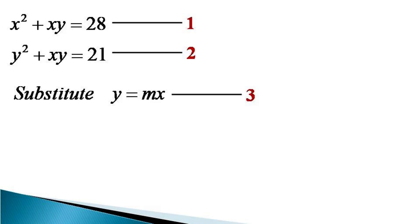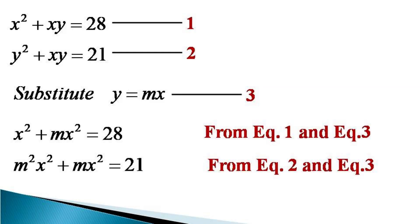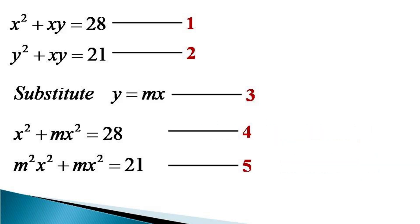Now we put this value of y from equation 3 into equations 1 and 2 to get modified equations: x² + mx² = 28 from equations 1 and 3, and m²x² + mx² = 21 from equations 2 and 3. We number these as equations 4 and 5 respectively.